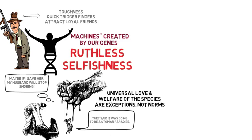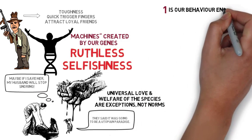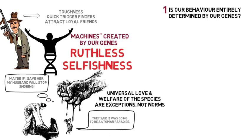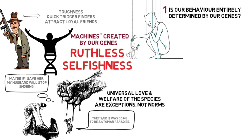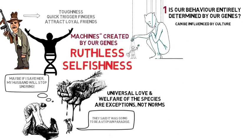Dawkins reminds us of three things before delving into this book. Firstly, a common misunderstanding about genes and genetically inherited traits is that they are fixed and cannot be changed, and that our behavior is entirely determined by them. Human beings are unique in relation to other species because our behaviors can be dominated and influenced by culture.